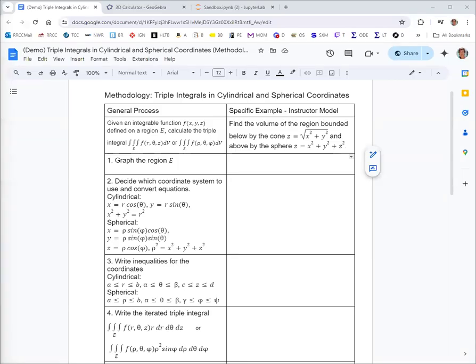We're going to take a look at triple integrals in cylindrical and spherical coordinates. We're asked to find the volume of the region bounded below by the cone z equals square root of x squared plus y squared, and above by the sphere x squared plus y squared plus z squared equals 2.